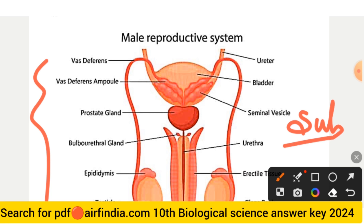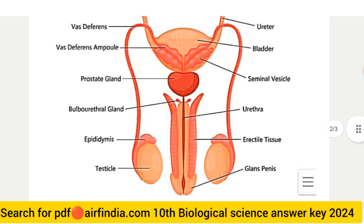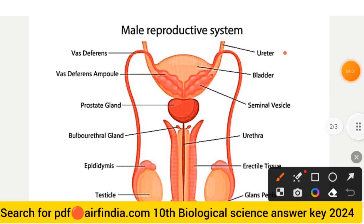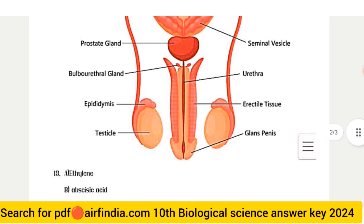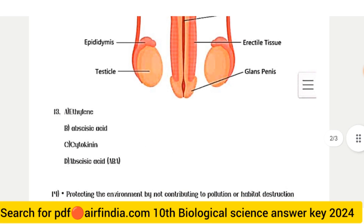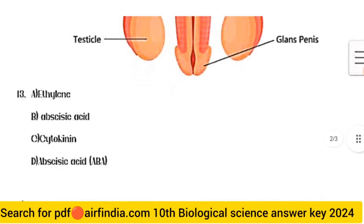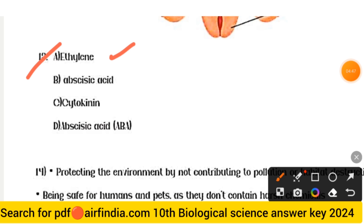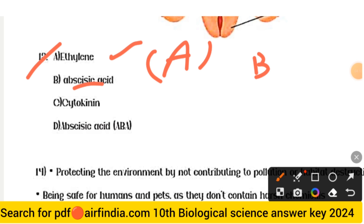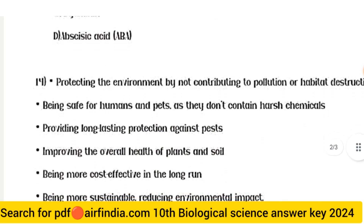The labeled parts of the male reproductive system include: ureter, bladder, seminal vesicle, urethra, prostate gland, and vas deferens. For question thirteen, the answers are: (a) ethylene, (b) abscisic acid (ABA), (c) cytokinin, and (d) abscisic acid (ABA).